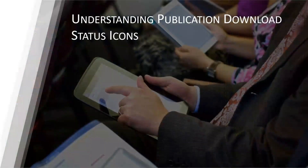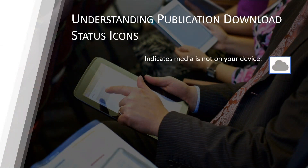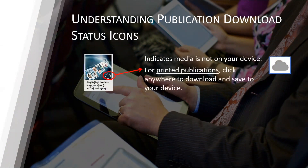To begin, let's first discuss the media download options that the JW Library app provides. For printed app publications, if you see a cloud symbol while connected to the internet, tap anywhere in the publication's thumbnail and it will automatically download it to your device. After it is downloaded, you can view it anytime without an internet connection.